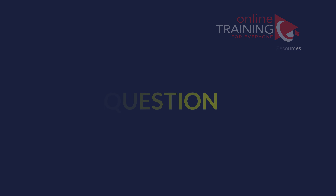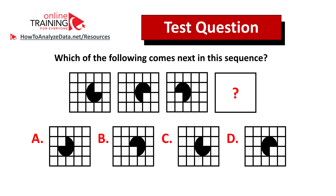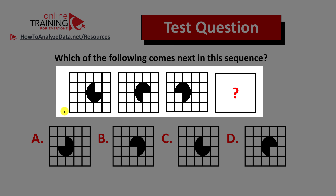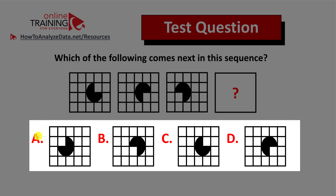Let's look at an interesting question which tests your visualization as well as analytical skills. Which of the following comes next in the sequence? You have a sequence of 4 by 5 rectangles, and each rectangle contains a pie inside. Figure 4 is missing, and there are four different choices for you to select from: Choice A, B, C, and D.